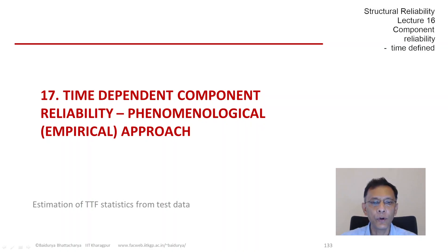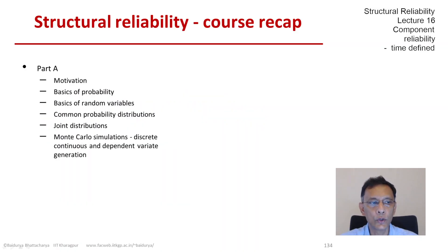Let's recap what we have done in the course so far. We completed part A, in which we talked about the basics of probability, the basics of random variables, common discrete and continuous probability distributions, joint distributions, and then Monte Carlo simulations and generation of discrete and continuous and dependent variables.